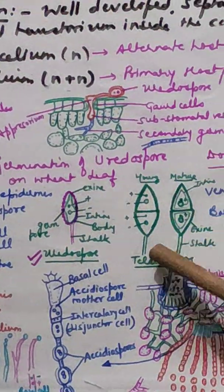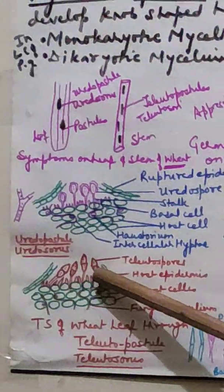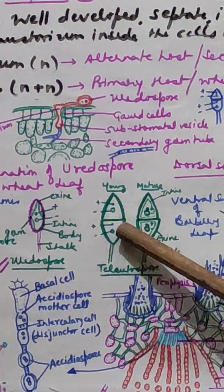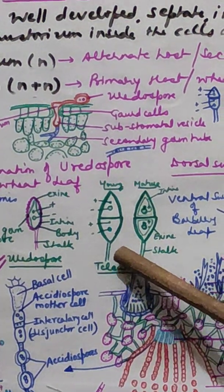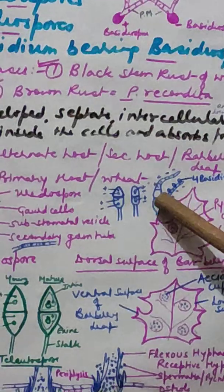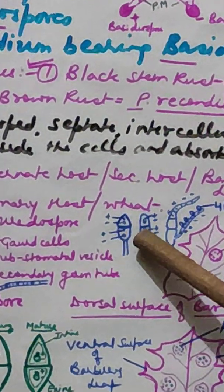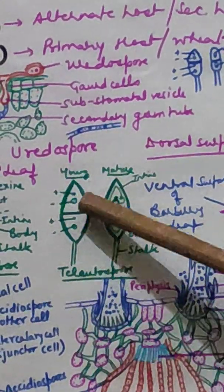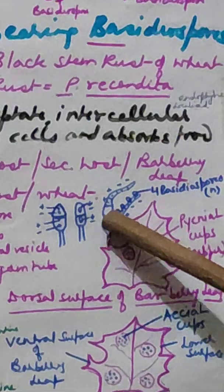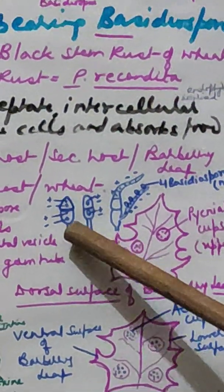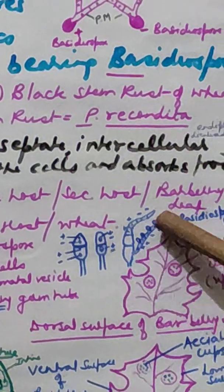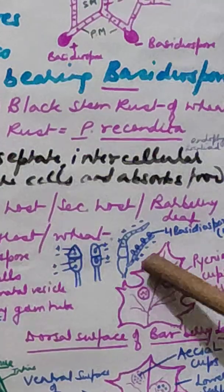The teleutospores are resting spores. After formation, they undergo a dormancy period. When favorable conditions return — including freezing temperature — the teleutospores germinate. During germination, the two nuclei (positive and negative) fuse with each other. This diploid nucleus divides through reduction division (meiosis) and forms four haploid nuclei, giving rise to four basidiospores via a promycelium or basidium structure. Of these four basidiospores, two are of positive strain and two are of negative strain.